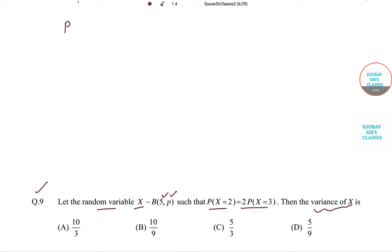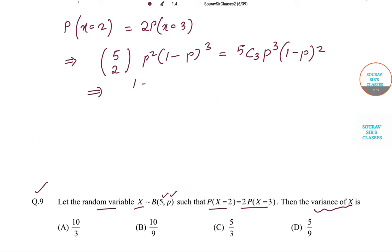This implies that 5C2 p² (1-p)³ is equal to 2 times 5C3 p³ (1-p)². If we solve this, we'll have 1-p is equal to 2p.